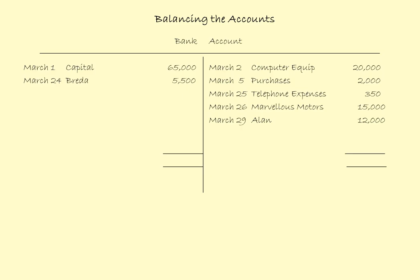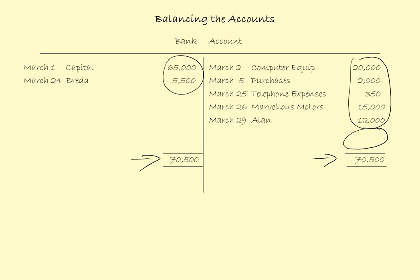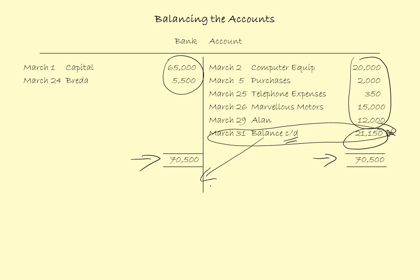The next account is the bank account. There are quite a number of entries on the bank account, and we need to identify which side is the largest. Looking at the debit side it would be 70,500, and the credit side comes to a lot less. So I put 70,500 as the total on both sides. The credit side doesn't add up to 70,500, so I put in the balancing figure: March the 31st, balance carried down. The difference is 21,150. I bring this balancing figure down onto the debit side: April the 1st, balance brought down, 21,150.